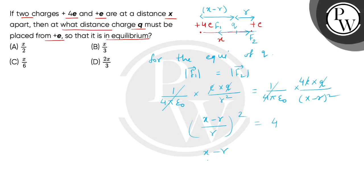So (x minus r) divided by r value will be plus minus 2. If we select the plus sign, x minus r equals 2r, so x equals 3r, and r equals x by 3.